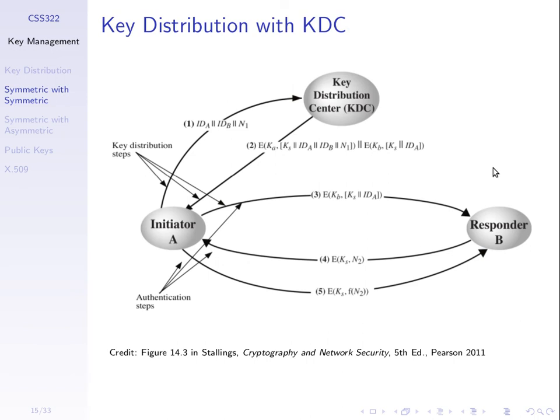Here is the automatic part of the KDC-based protocol, done by sending messages across the network between three entities. A wants to initiate communications with B. A wants to send data to B, and to do that they need a shared session key. They already have master keys but need a session key to encrypt their data, and to get that they follow five steps.